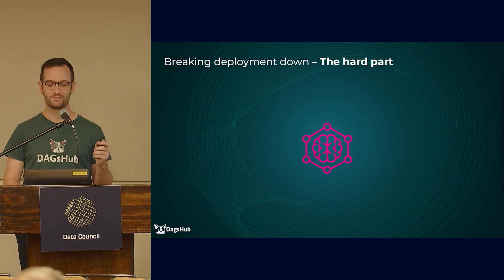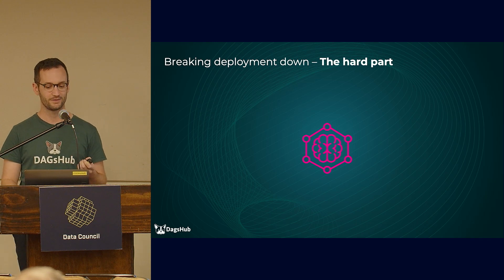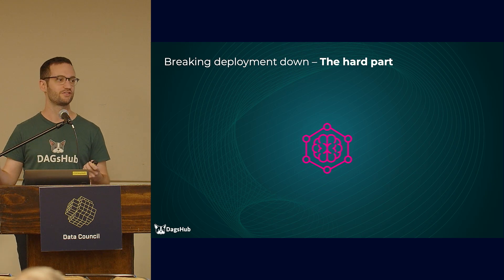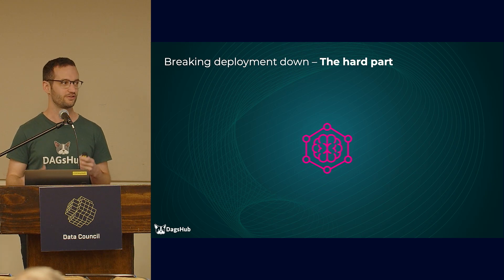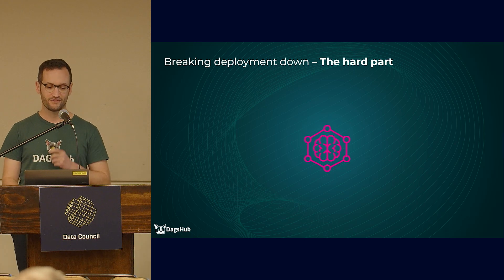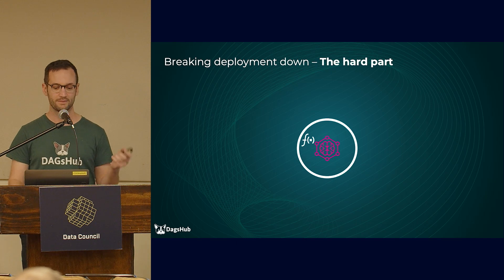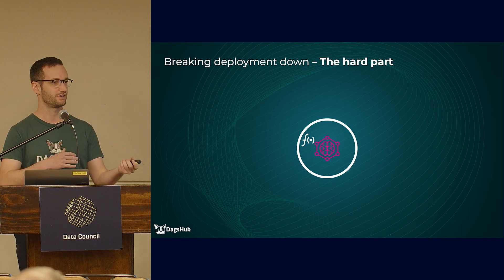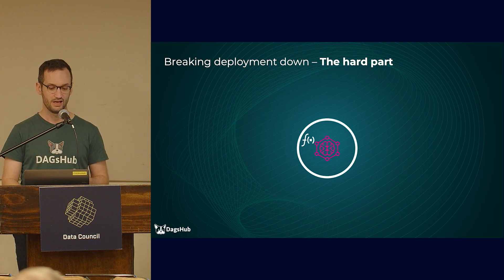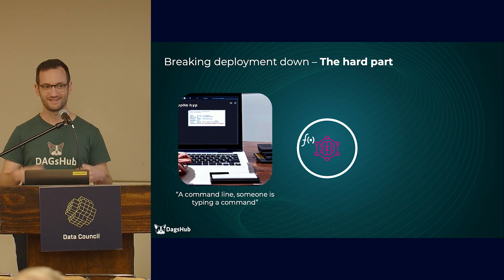So how do we break deployment down into its constituent components from first principles? I'm going to go over a theoretical breakdown and then give you practical recommendations for each step. So we have our model ready. The first thing we're going to do is write a bit of code — a function that wraps this trained model, loads it, receives the data, and performs the prediction, and then returns that prediction as a function output. Once we did that, we can now predict locally, which is pretty awesome — the first time you do it, it's exciting.